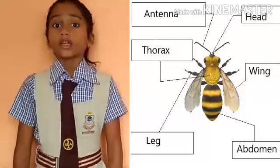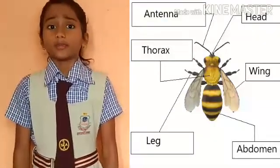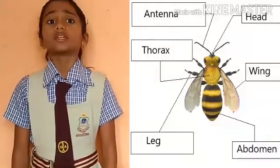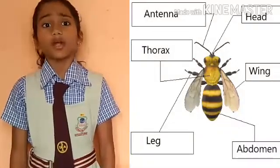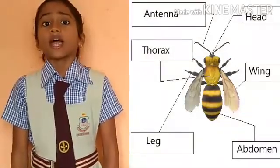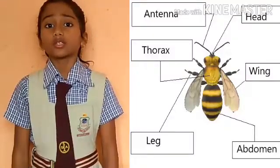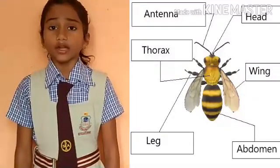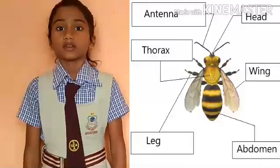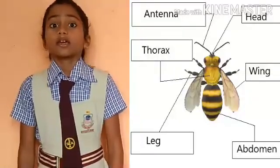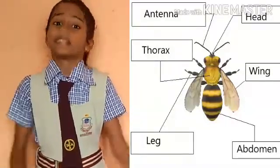Next is abdomen. Abdomen is the largest part of the insect's body. It contains stingers and two holes present on either side of the body of an insect. These are called spiracles. Insects breathe through spiracles. Thank you.